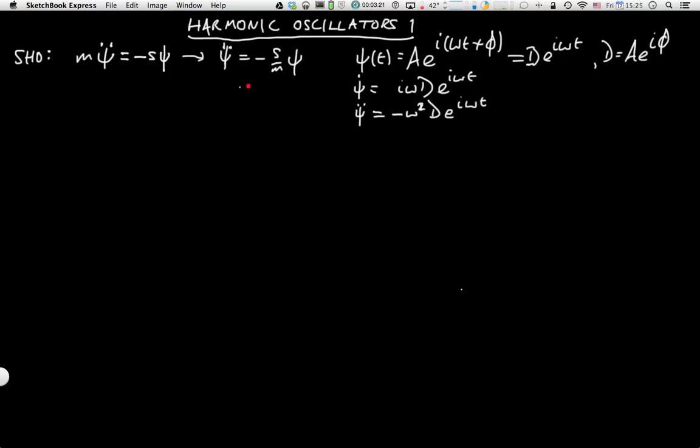If we substitute back into our original equation, then we get that minus ω² D e^(iωt) equals minus s over m D e^(iωt).